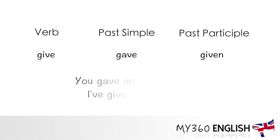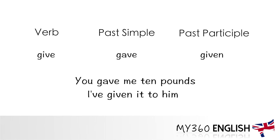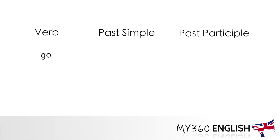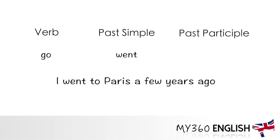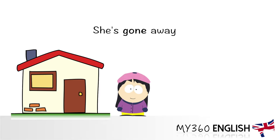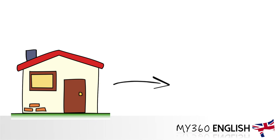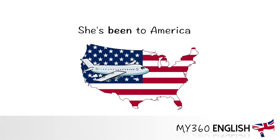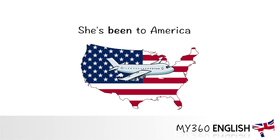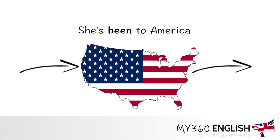Give — gave — given. For the verb 'to go', the past simple is 'went': 'I went to Paris a few years ago.' However, we have two different options for the past participle: 'gone' and 'been'. 'Gone' indicates a movement away from a place, and 'been' indicates a movement to and then away from a place. For example, 'she's gone away' means she's no longer there. While 'she's been to America' means she has spent time in America but isn't there anymore.